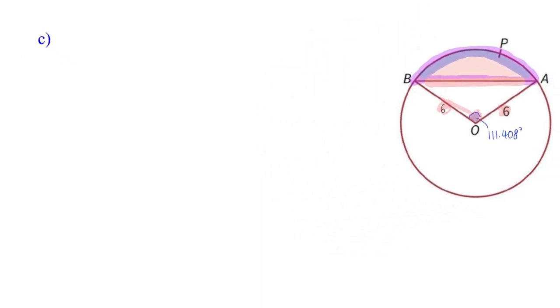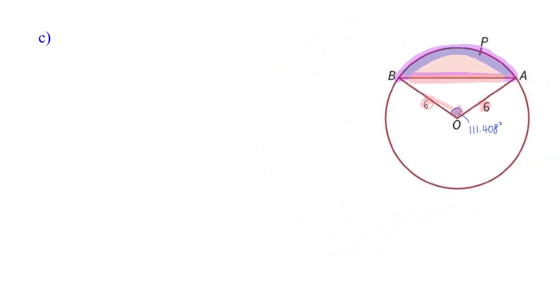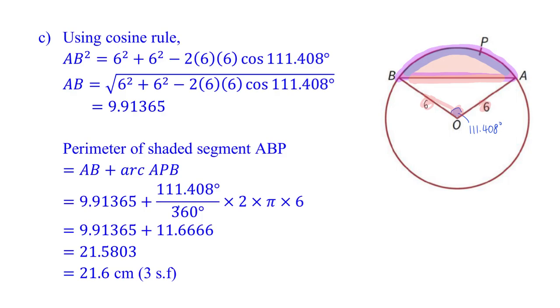And so you will then see Mr. Tan's working as such. Using cosine rule, I find my length AB. After which, I need to find my arc AB, which is this. This is my AB. So to get the perimeter, I just need to add them out. And this will be the final answer.